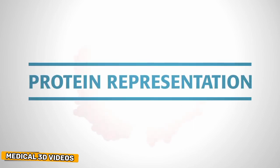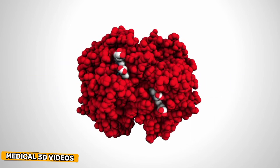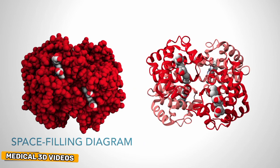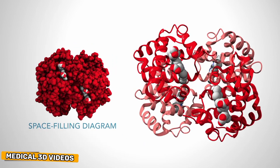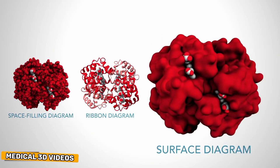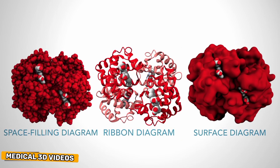Different visual representations of proteins can give us visual clues about protein structure and function. This space-filling diagram shows all of the atoms that make up this protein. This representation, called a ribbon or cartoon diagram, shows the organization of the protein backbone and highlights alpha helices. This surface representation shows the areas in the protein that are accessible to water molecules.